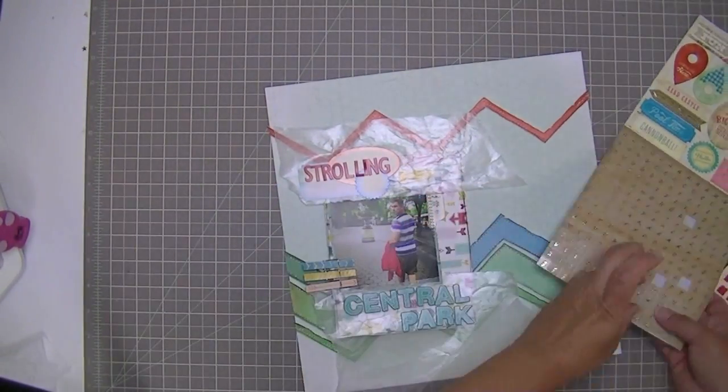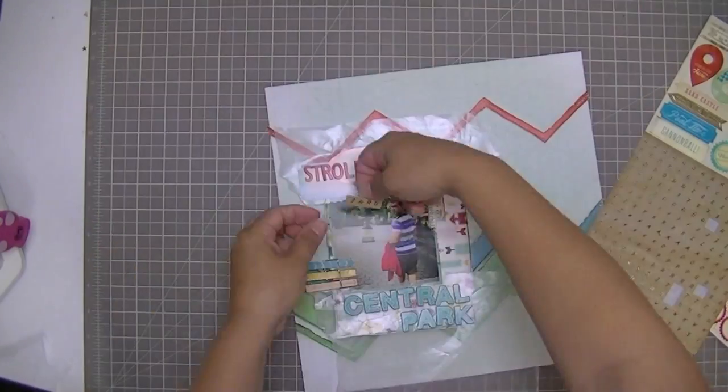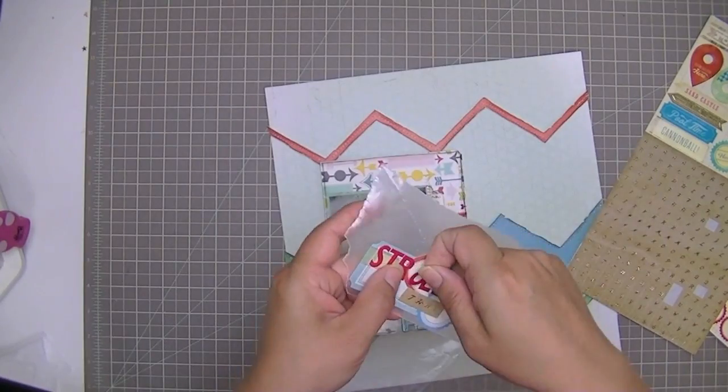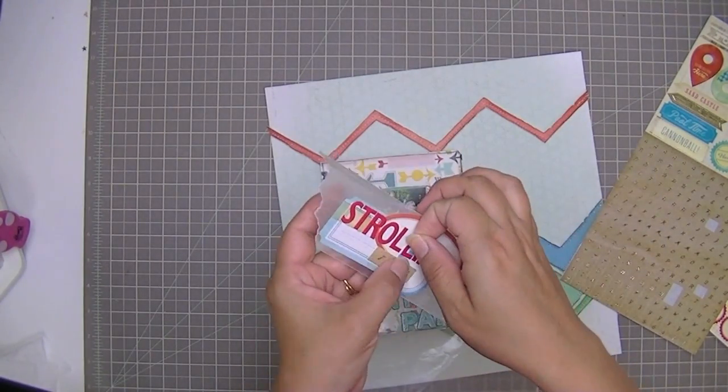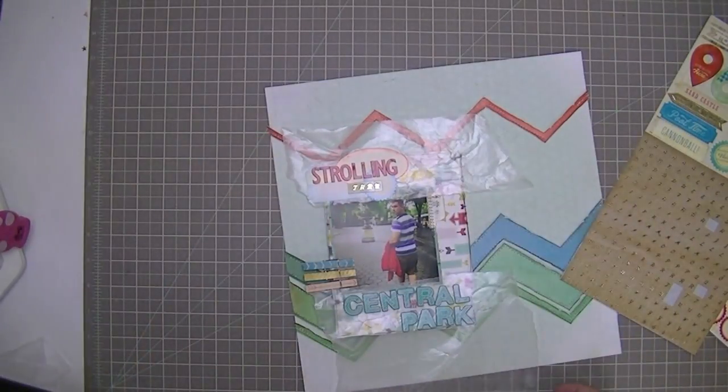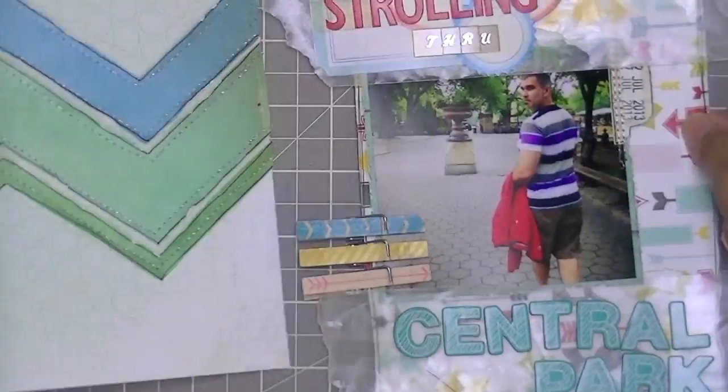And then these are crepe paper letter stickers. They're beautiful. They're like a marble. They look almost like a marble tile with a gold font on them. And it's a scroll, like a cursive font. It's really, really pretty. There you see it up close.